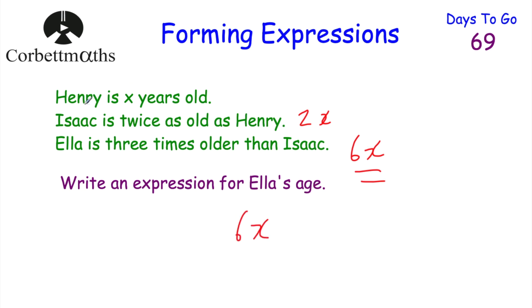Let's just recap: Henry is X years old, Isaac is twice as old so that's 2X, and Ella is three times older than Isaac so we multiply 2X by 3 to get 6X. The expression for Ella's age is 6X. Well done if you got that.